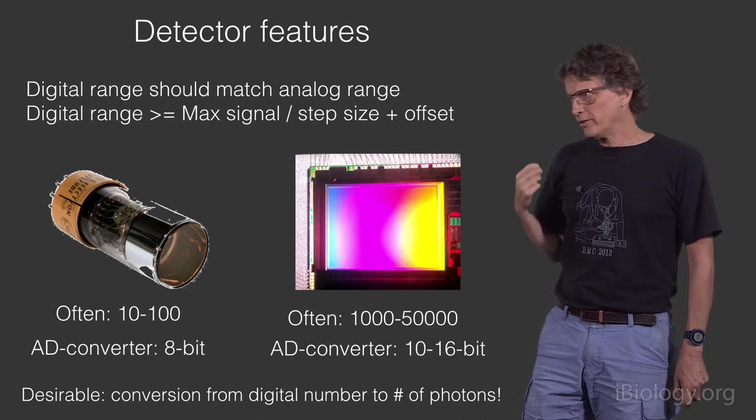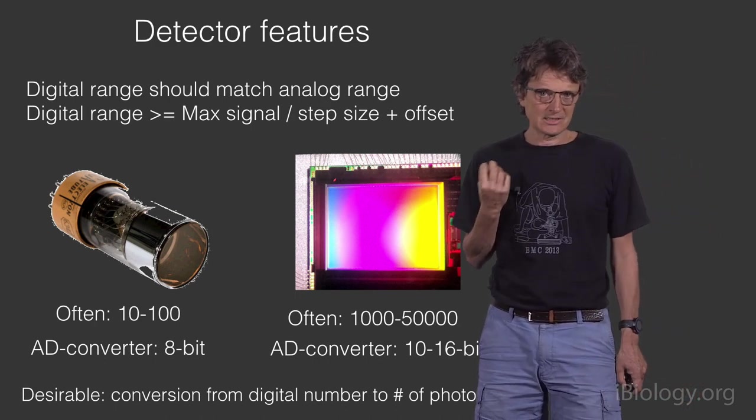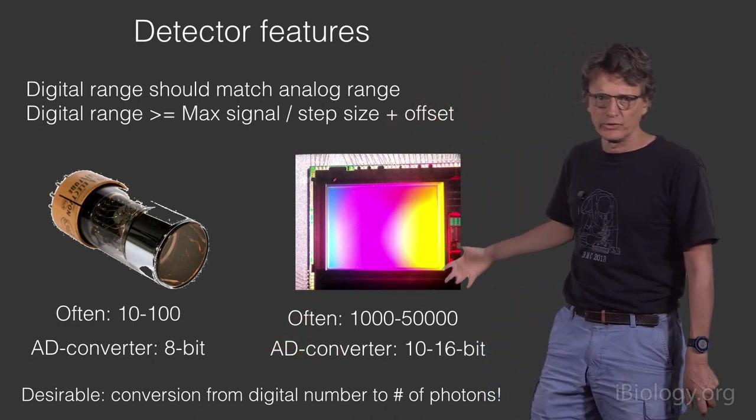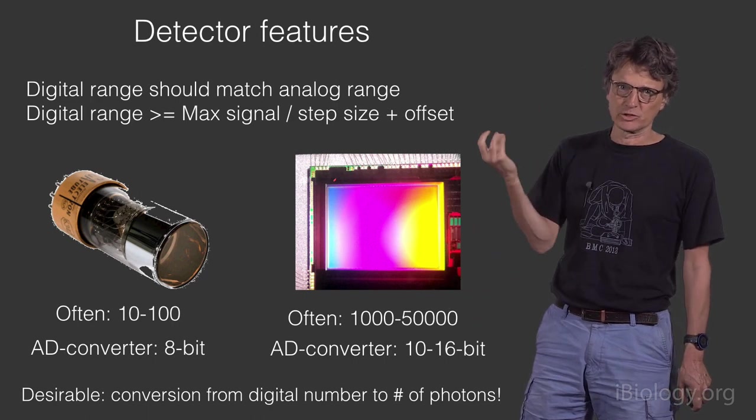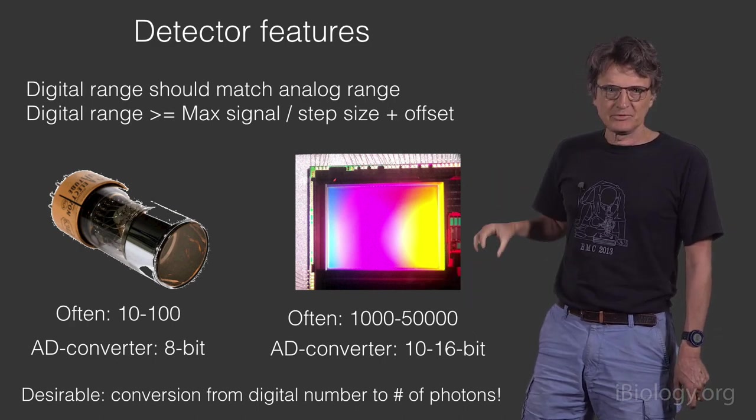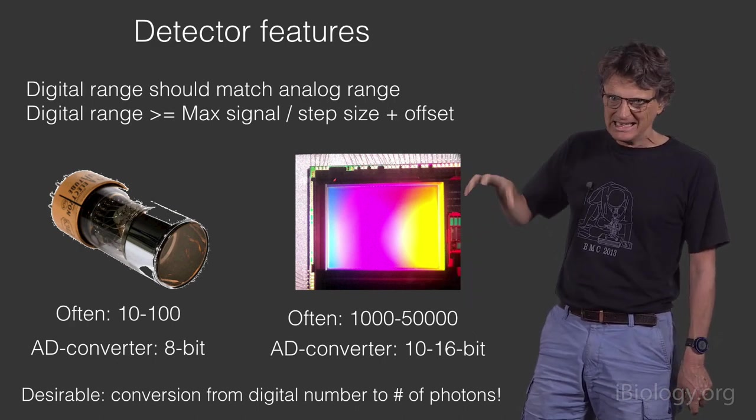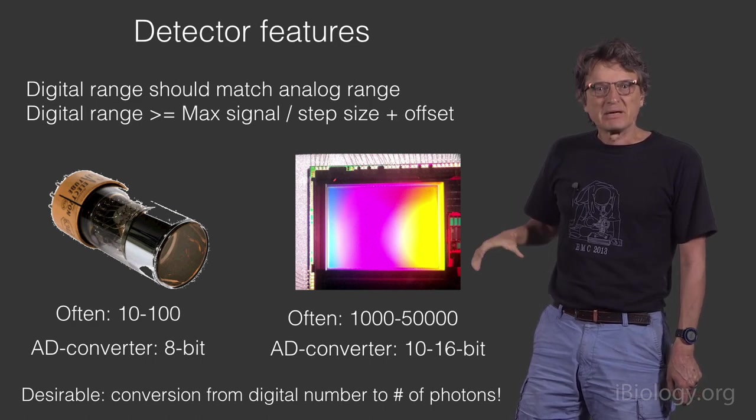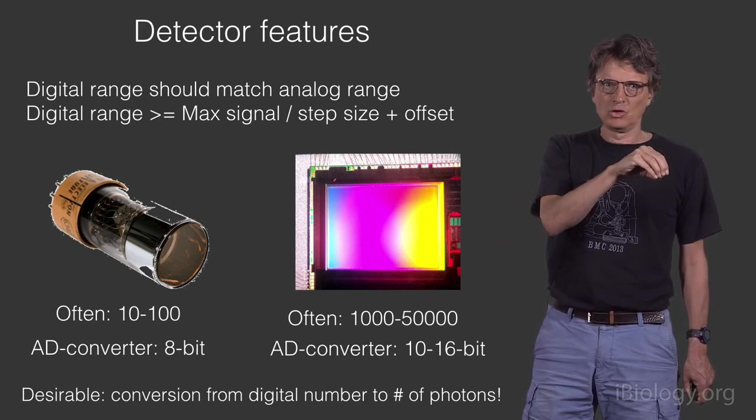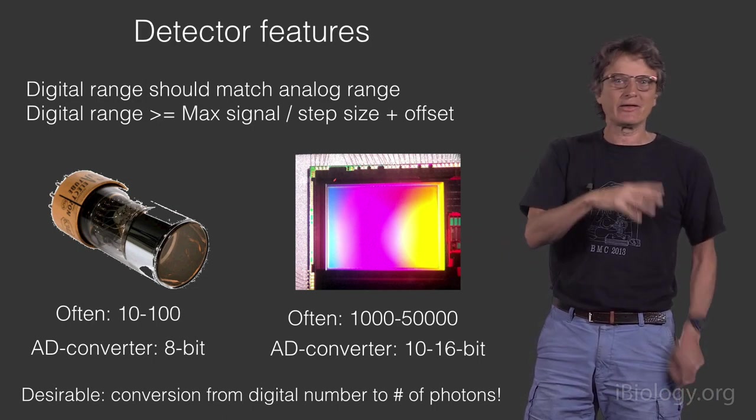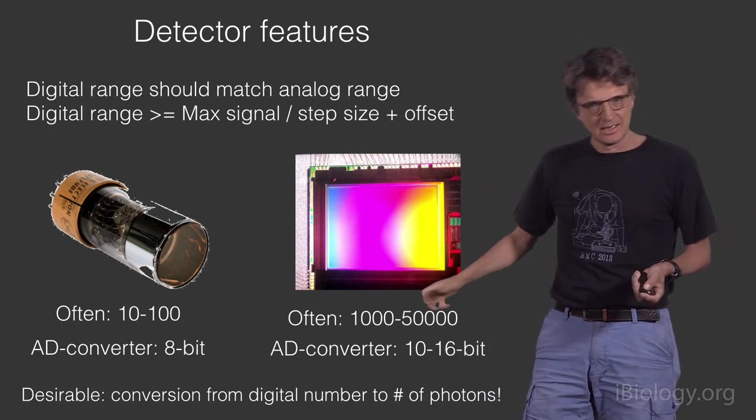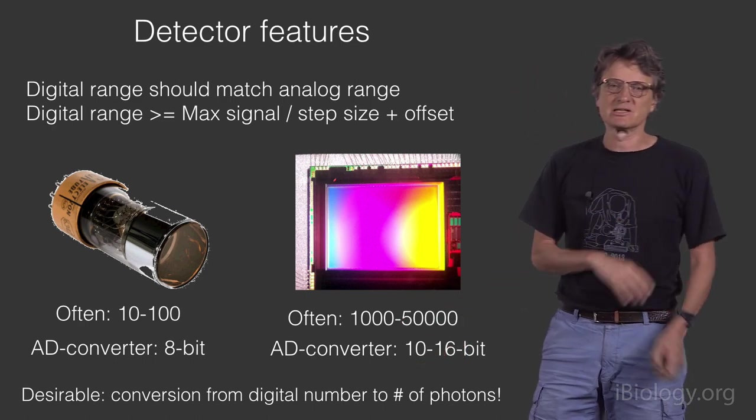One thing that you would like to know, but that is often not available, is how to convert the digital number that you have to the original number of photons that was collected by the detector. Whenever you can find out, that number will depend on things like gain of the detector, but that really would give you a way to go back to a physically meaningful intensity value, rather than something relative. You will see in practice that you often work with relative changes. This is not absolutely essential, but desirable.